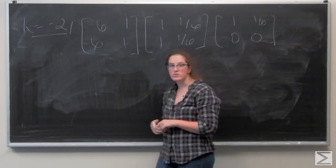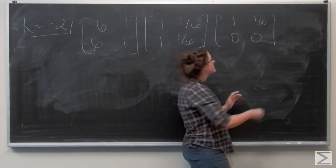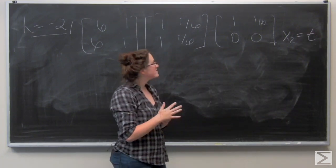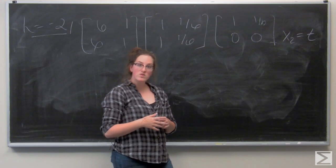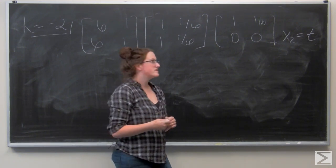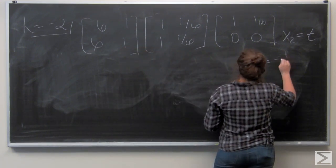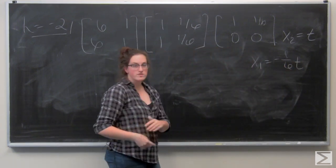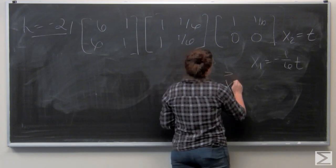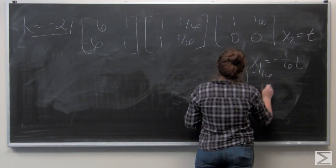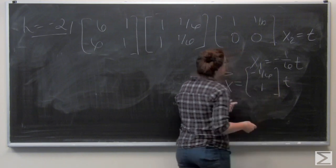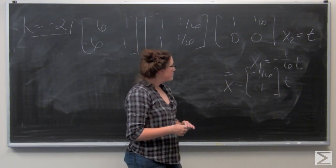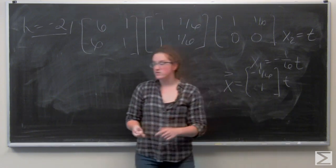So again, I have a free variable for x2. I'm going to call it t. And I can back substitute x1 plus 1 over 6t equals 0. x1 equals negative 1 over 6t. So I can go ahead and write that as a vector solution. Negative 1 over 6, 1 times t. So I just need to put that back in over here.